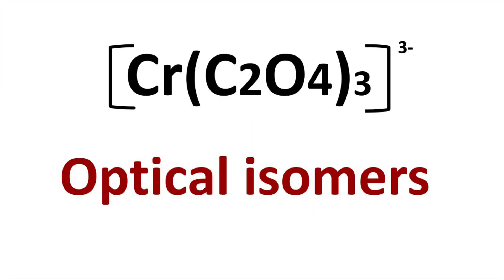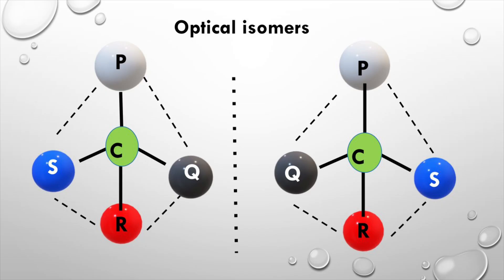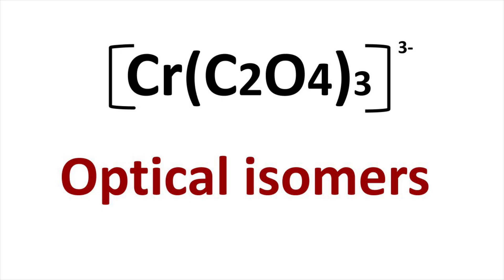Welcome to Aurora chemistry for everyone. Optical isomers are mirror images that cannot be superimposed on one another. These are also called enantiomers. We are here to draw optical isomers of Cr(C2O4)3^3-.